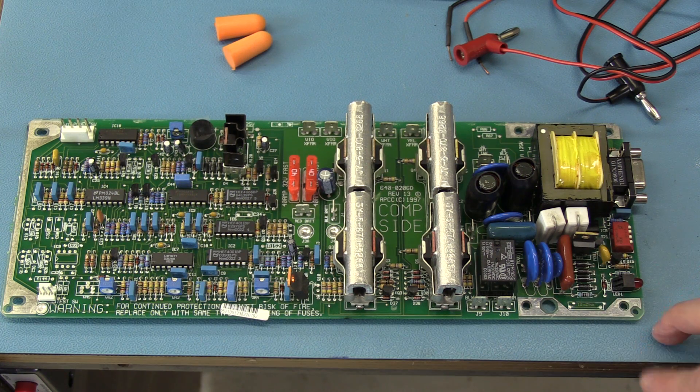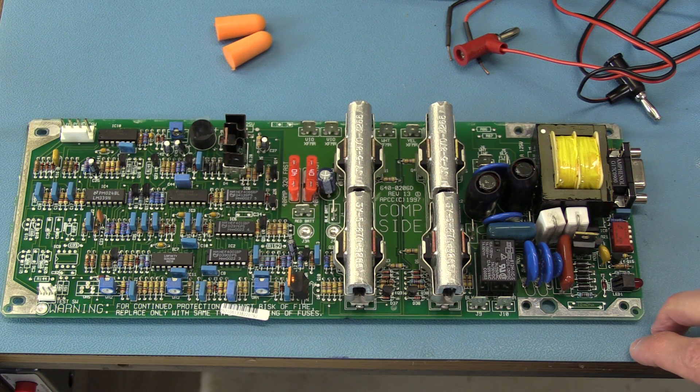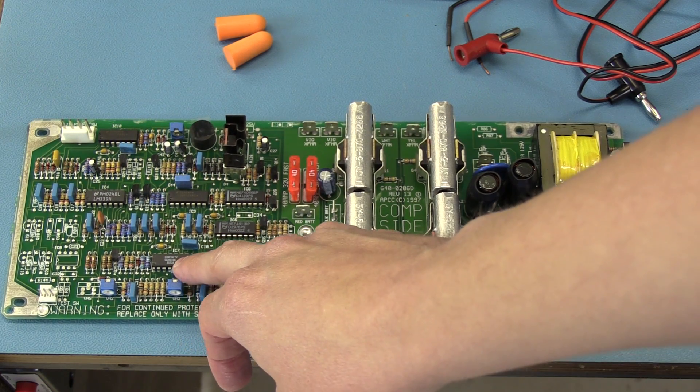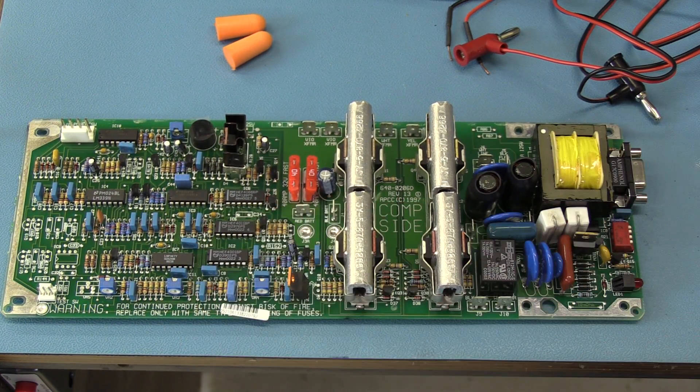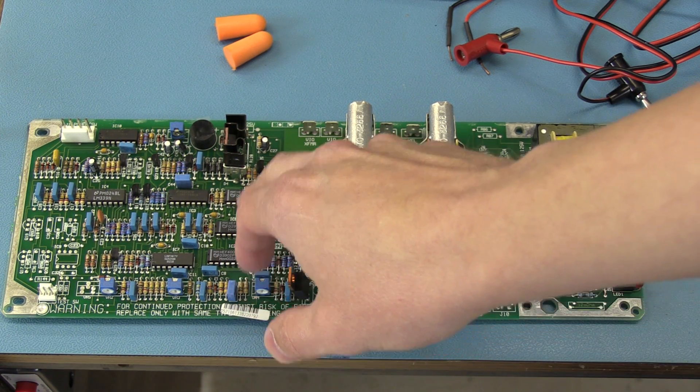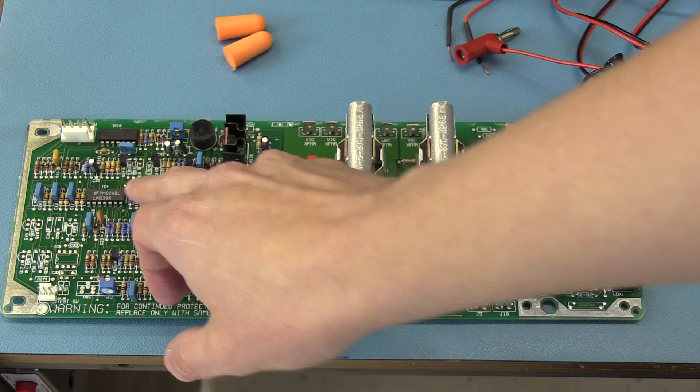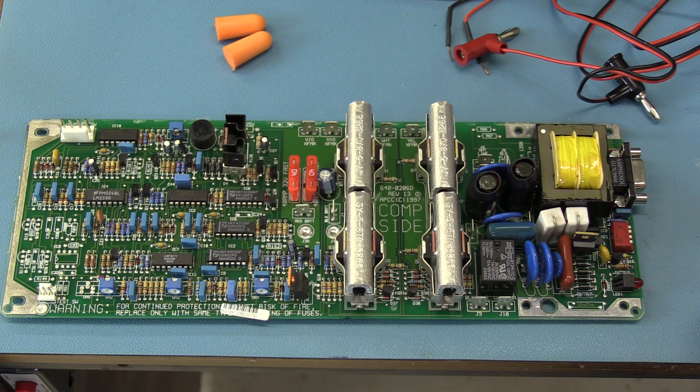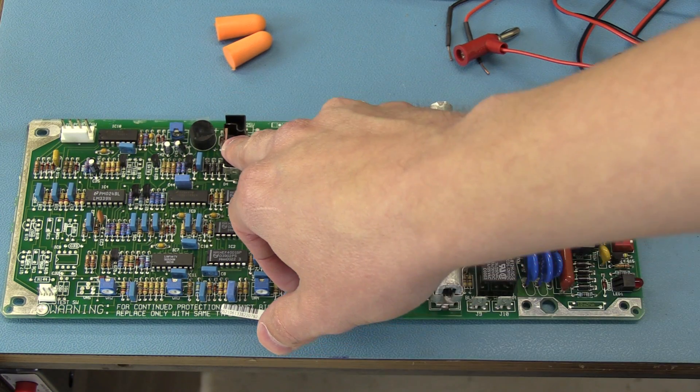What really delights me about this is there's no microcontroller. This SG3524 PWM controller is the most complicated chip in the thing. Other than that, you've got like some little logic: a 4001, a 4011, a 339 comparator, Schmidt triggers, some discrete components. I'm guessing this guy is a linear regulator.